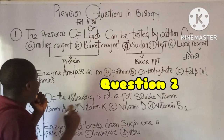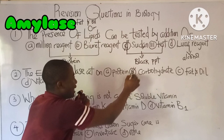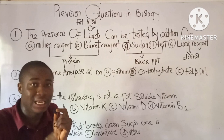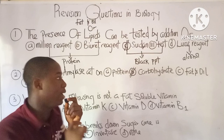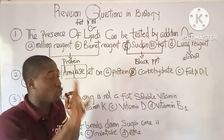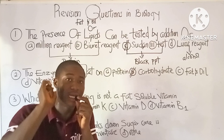Question 2: the enzyme amylase acts on carbohydrates. When we classify enzymes based on the food they act on, there are three types: amylase, which acts on carbohydrates; protease, which acts on proteins; and lipase, which acts on fats and oils, also called lipids.